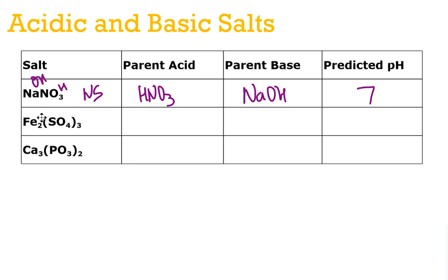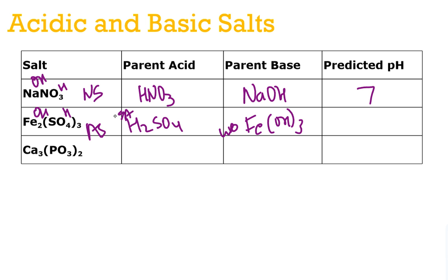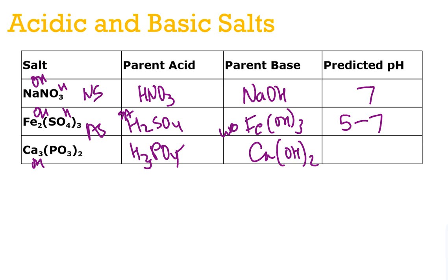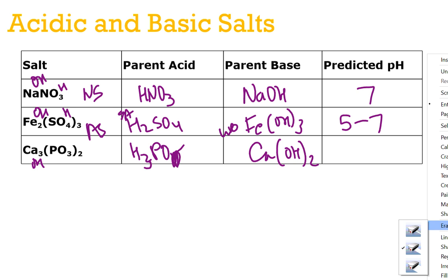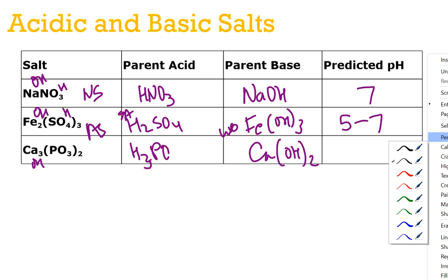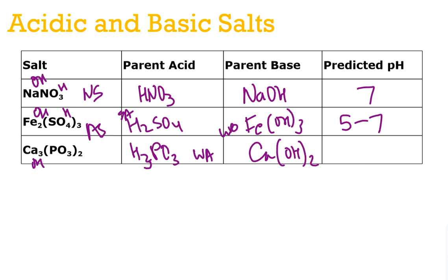Iron(III) sulfate: we bind hydroxide to the iron and hydrogen to the sulfate. The parent acid is H₂SO₄, sulfuric acid — one of the seven strong acids. The parent base is iron(III) hydroxide — that's not a strong base, it's a weak base. So this is an acidic salt, with a pH of 5 to 7. Finally, calcium phosphite: calcium hydroxide is a strong base, and H₃PO₃ is phosphorous acid — a weak acid. Strong base and weak acid means the pH is 7 to 9, because this is a basic salt.